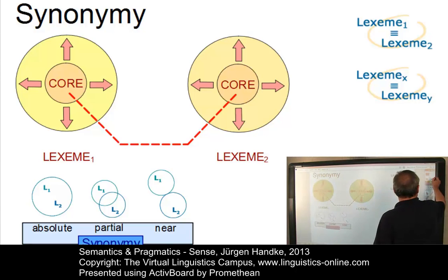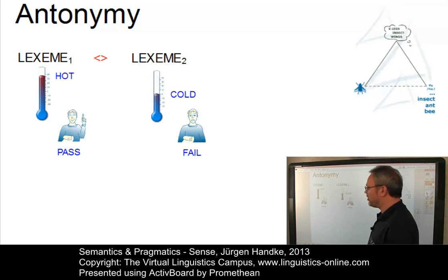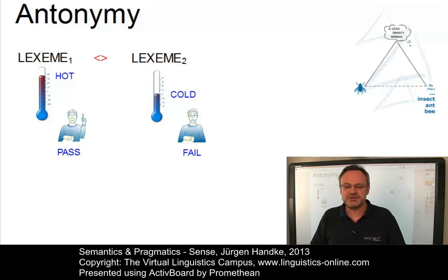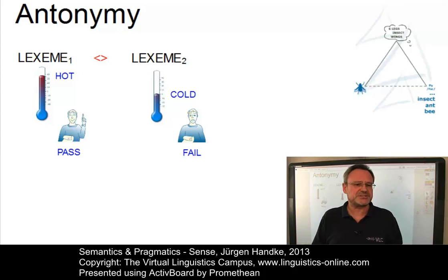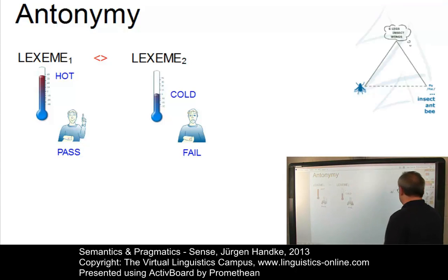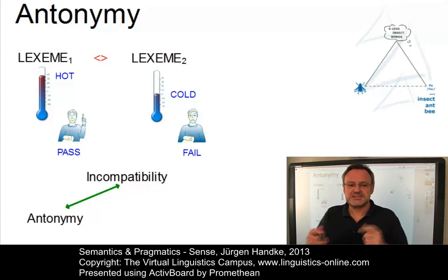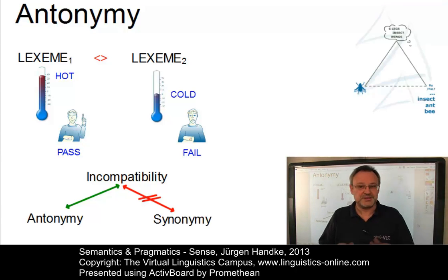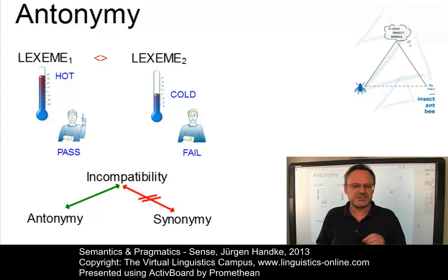Let us now look at the second relationship: antonymy. The term antonymy is used for oppositeness of meaning. In contrast to synonymy, antonymy is a very regular feature of natural language and can be defined fairly precisely. Here you have antonym pairs such as hot and cold, or pass and fail. Since there are many ways in which lexical items can stand in opposition to each other, some linguists reject the term antonymy and suggest the term incompatibility instead. According to this view, antonymy would be defined as a converse relationship of incompatibility. There are several ways in which lexical items can stand in opposition to each other.